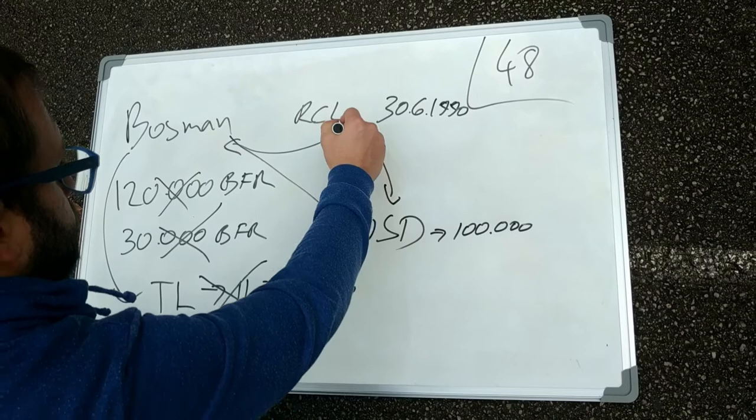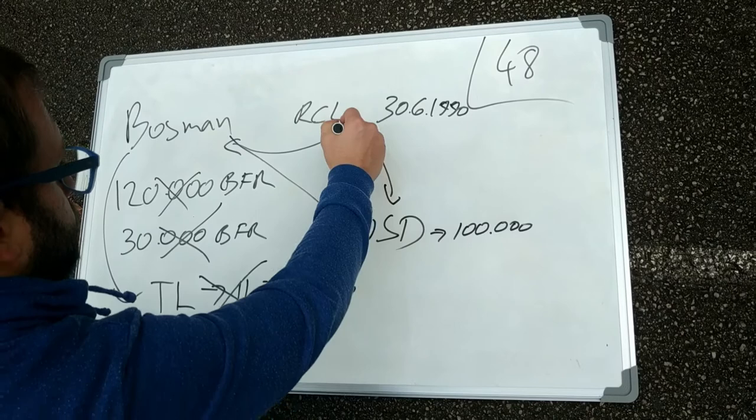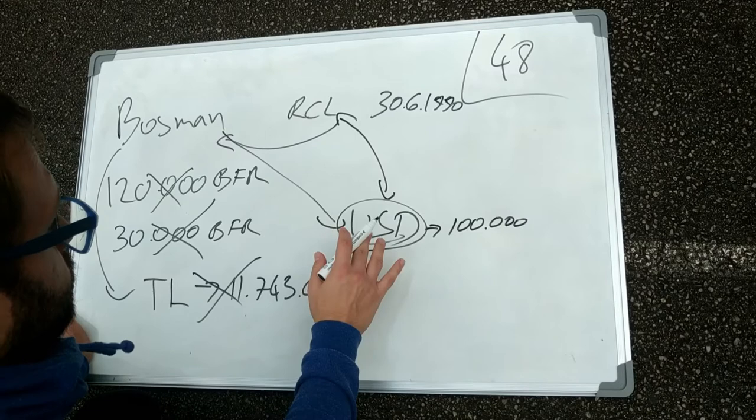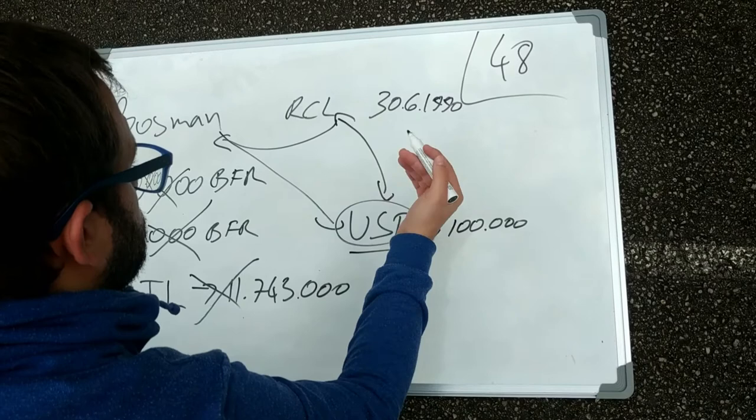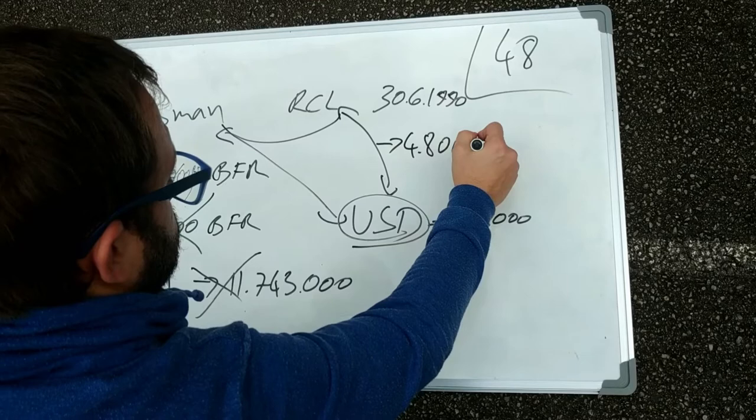July 27th 1990, a contract was concluded between RC Liège and US Dunkirk for one year temporary transfer, against payment by US Dunkirk to RC Liège of a compensation fee of 1,200,000 BFR on receipt by French Football Federation of the transfer certificate issued by URBSFA. The contract also included an irrevocable option for full transfer of 4,800,000 BFR.